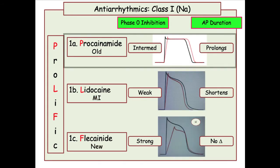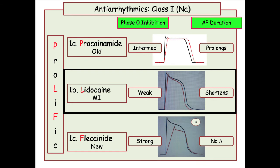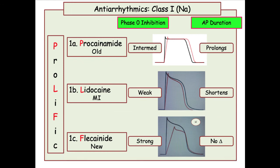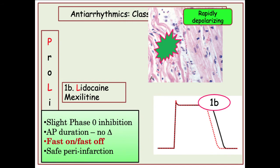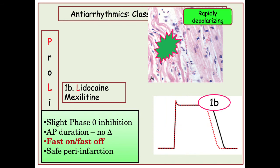Diagrammatically, the older class 1A agents prolong the action potential, whereas lidocaine as a class 1B agent shortens the action potential, making it an ideal agent for the most vulnerable patients — those with acute MI. Class 1C, the newer class of drugs, has the unique property of strong inhibition of phase zero without prolonging the action potential. Class 1B drugs — lidocaine and mexiletine — have weak effects on phase zero, no prolongation of the action potential, and rapid dissociation from the sodium channel, making them safe in the peri-infarction period, especially with rapidly depolarizing injured tissues.